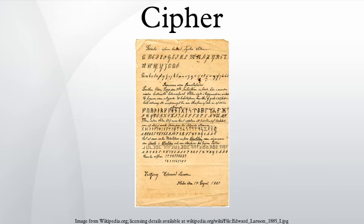To encipher or encode is to convert information from plain text into cipher or code. In non-technical usage, a cipher is the same thing as a code. However, the concepts are distinct in cryptography. In classical cryptography, ciphers were distinguished from codes. Codes generally substitute different length strings of characters in the output, while ciphers generally substitute the same number of characters as are input.